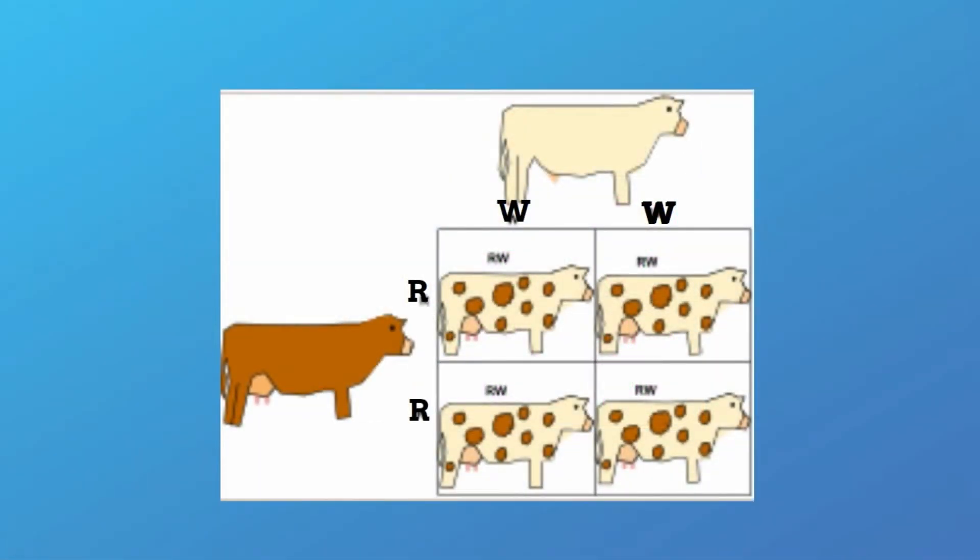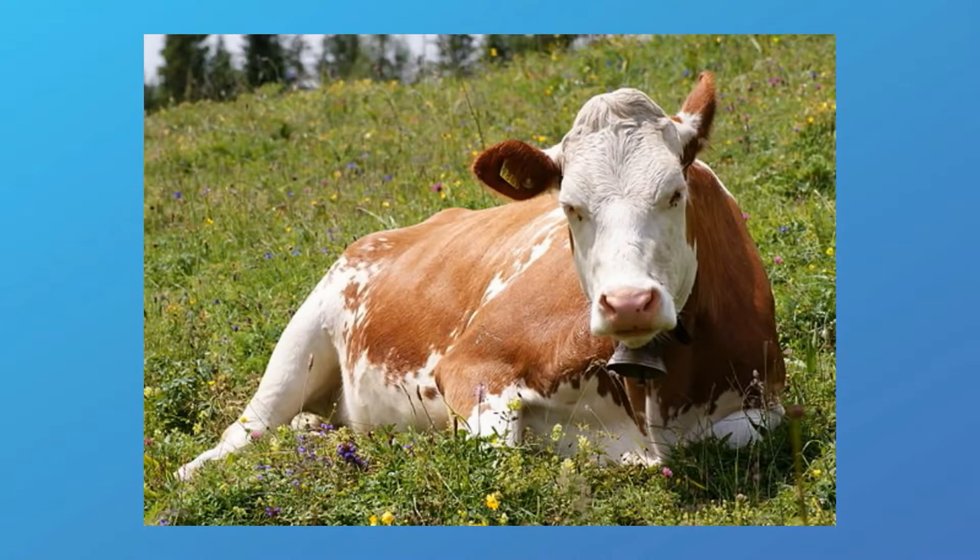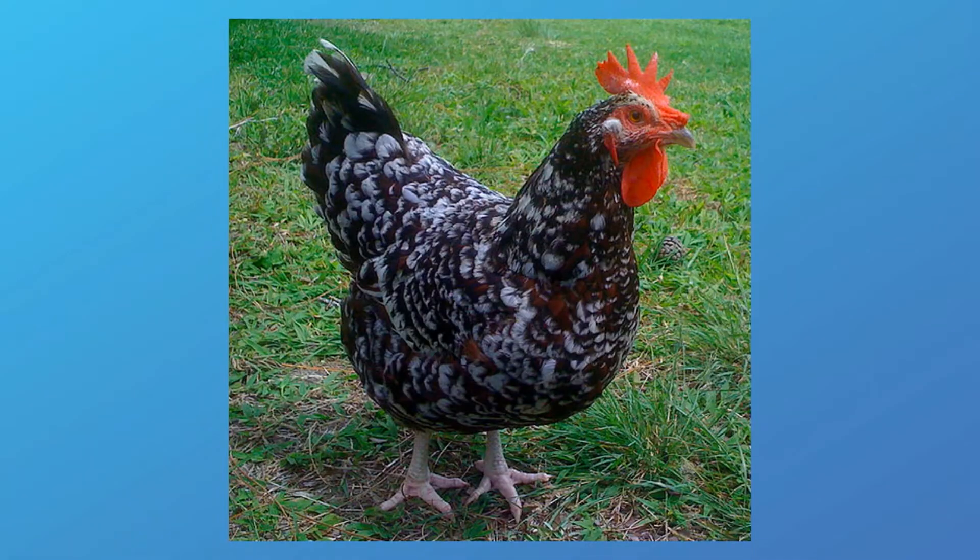Check out this Punnett square of these two cows. The white and brown color are both dominant, and therefore they both appear. They don't blend, but instead they both show up. This cow is an example, and this speckled chicken is an example of co-dominance.